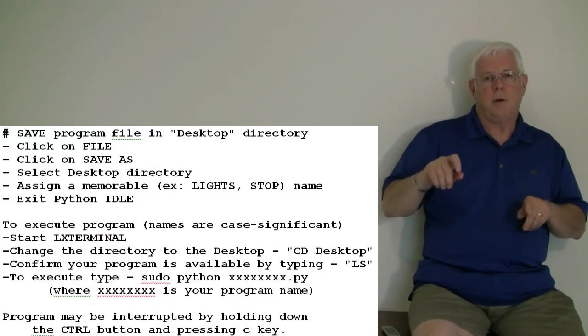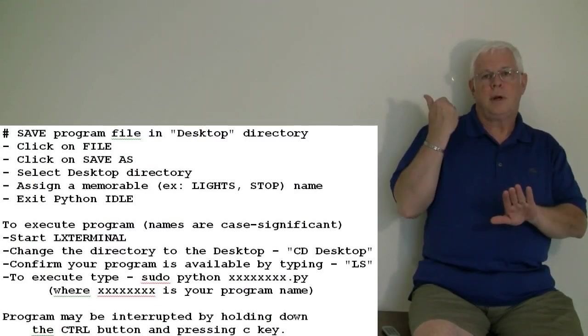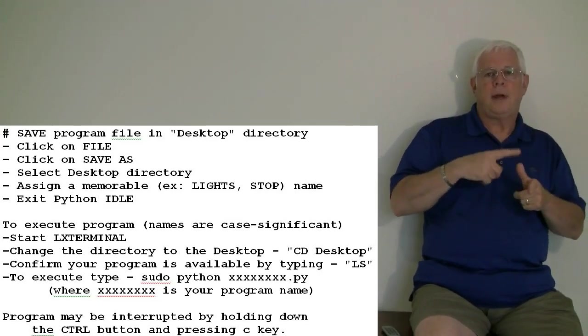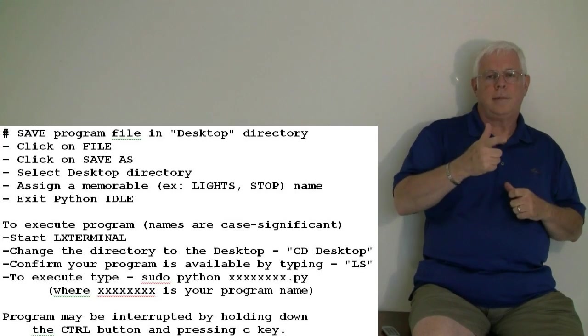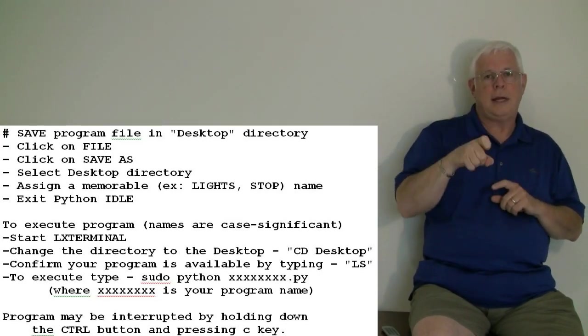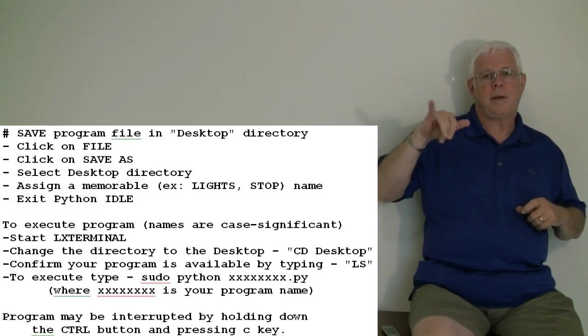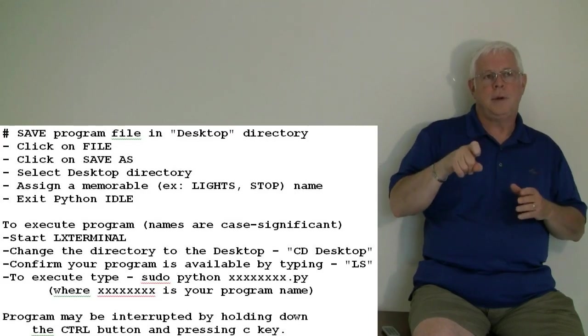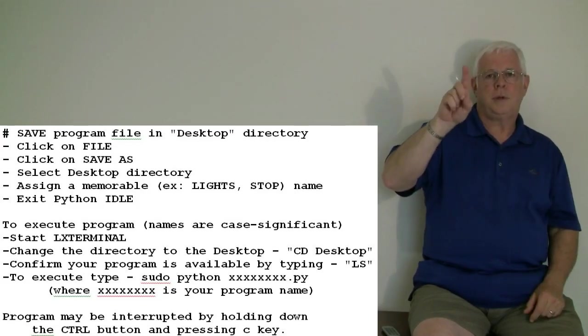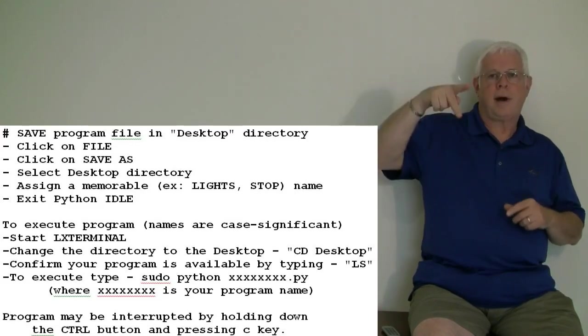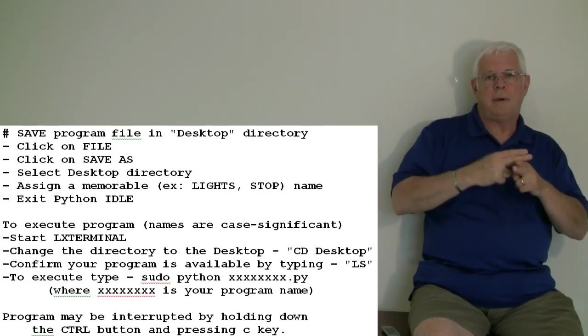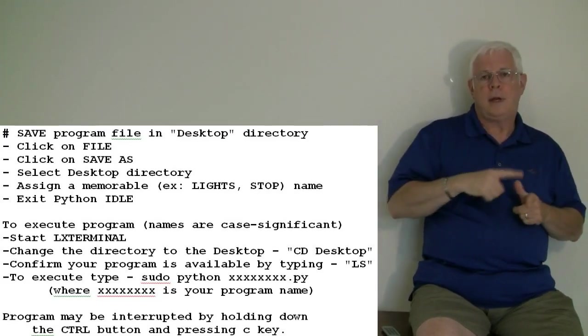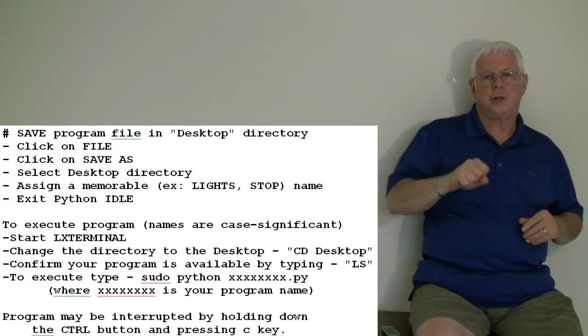Since you have run your own program before, you know how to write your Python code and save it, and then to execute it later. In this situation, you're going to need to execute the Python program in command mode. That means you need to type SUDO, then Python, and then the name of your program with the dot PY at the end. Then start it, and it should work just fine.